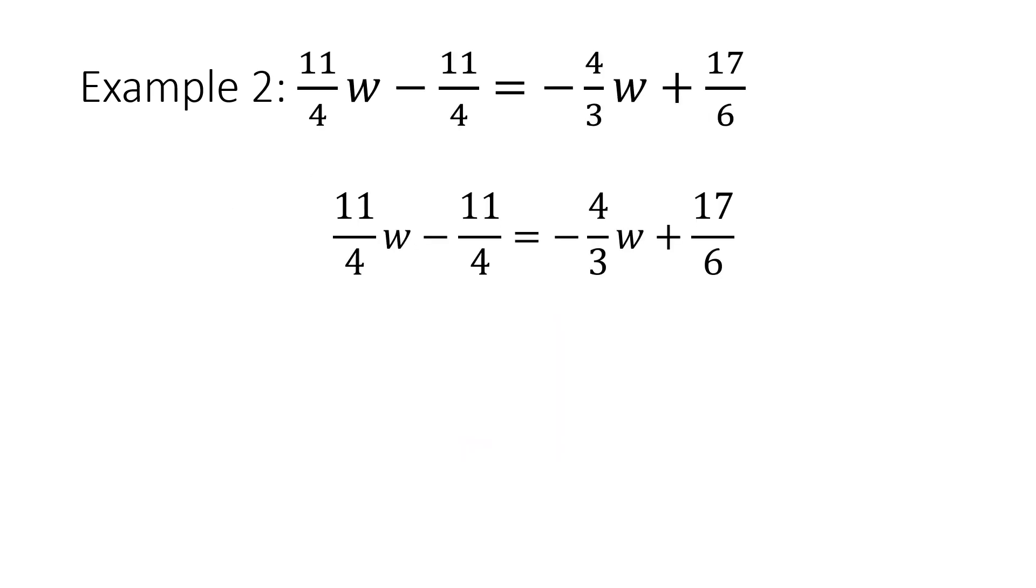Example 2: Again, in order to get rid of my fractions, I need to find the least common multiple between the denominators 4, 3, and 6. The LCM of 4, 3, and 6 is 24.